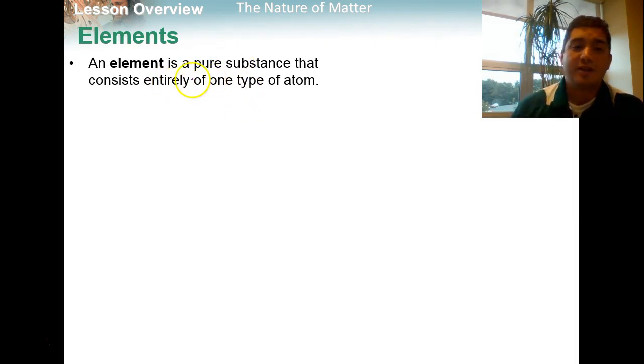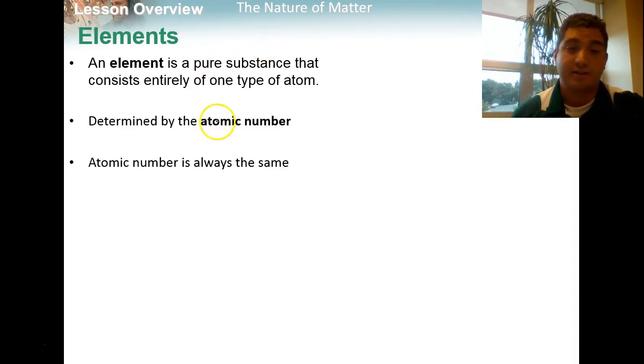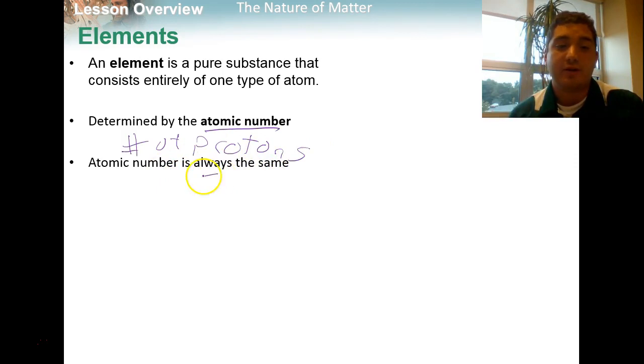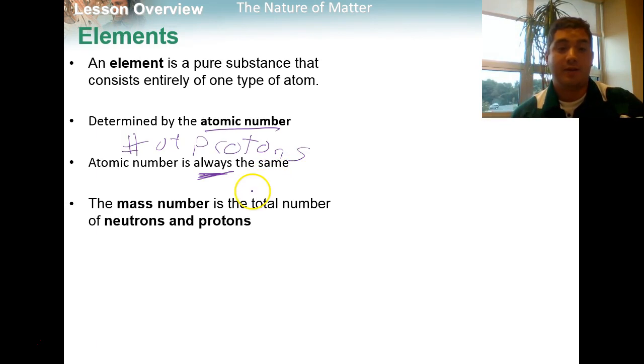Now an element is a pure substance that consists entirely of one type of atom. Now it makes atoms different from one another to create different elements is the numbers of protons in each. And this is called the atomic number. So remember, the protons are the positive ones in the nucleus, and the atomic number is the number of protons that is found in an element.